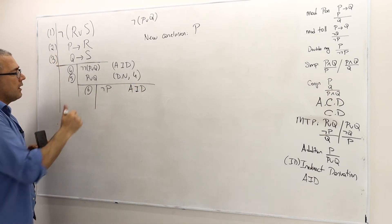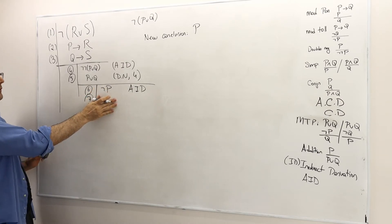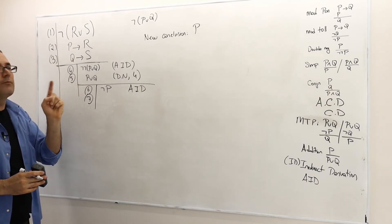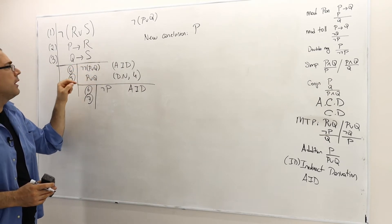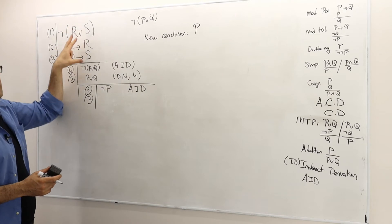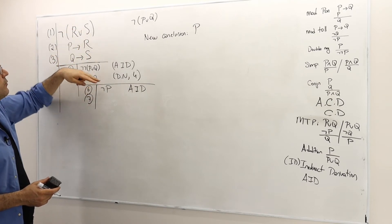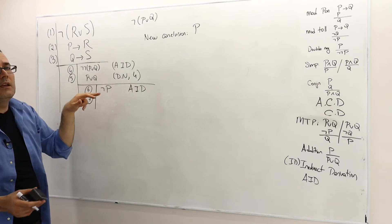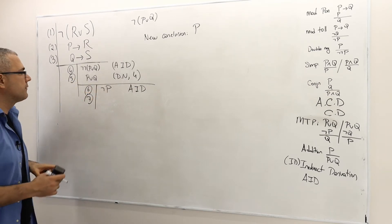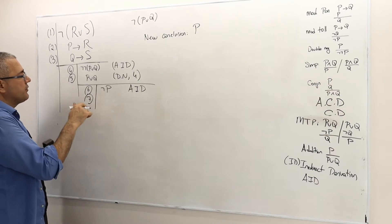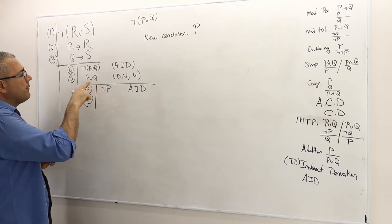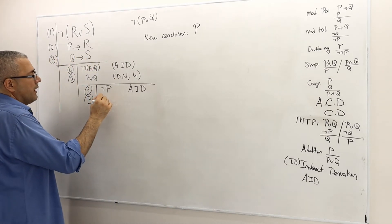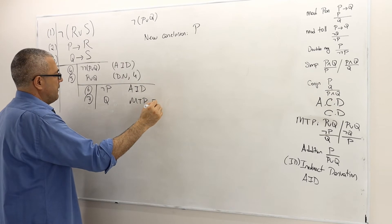Not P is assumed to be true as well. Now, everything before line six is assumed to be true. I assumed it — it's not like the premises, but once I reach line six, everything before is assumed true. So in line seven, I'm going to use P or Q and not P — this is basically MTP — which means Q must be true. MTP, thanks to arguments in line five and six.